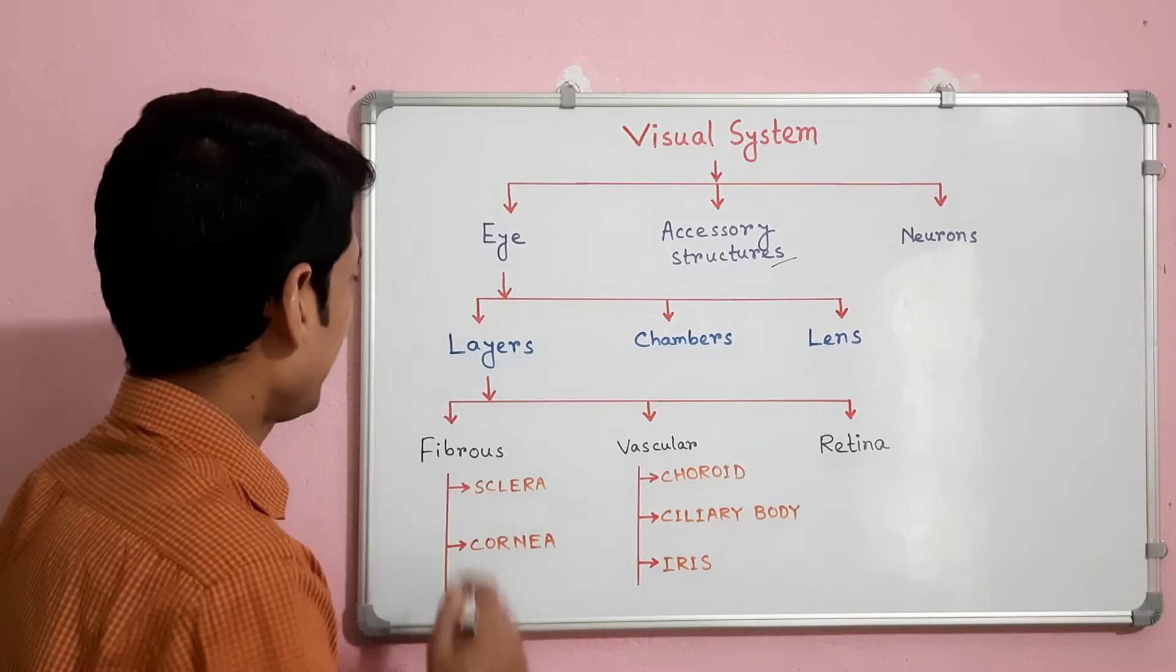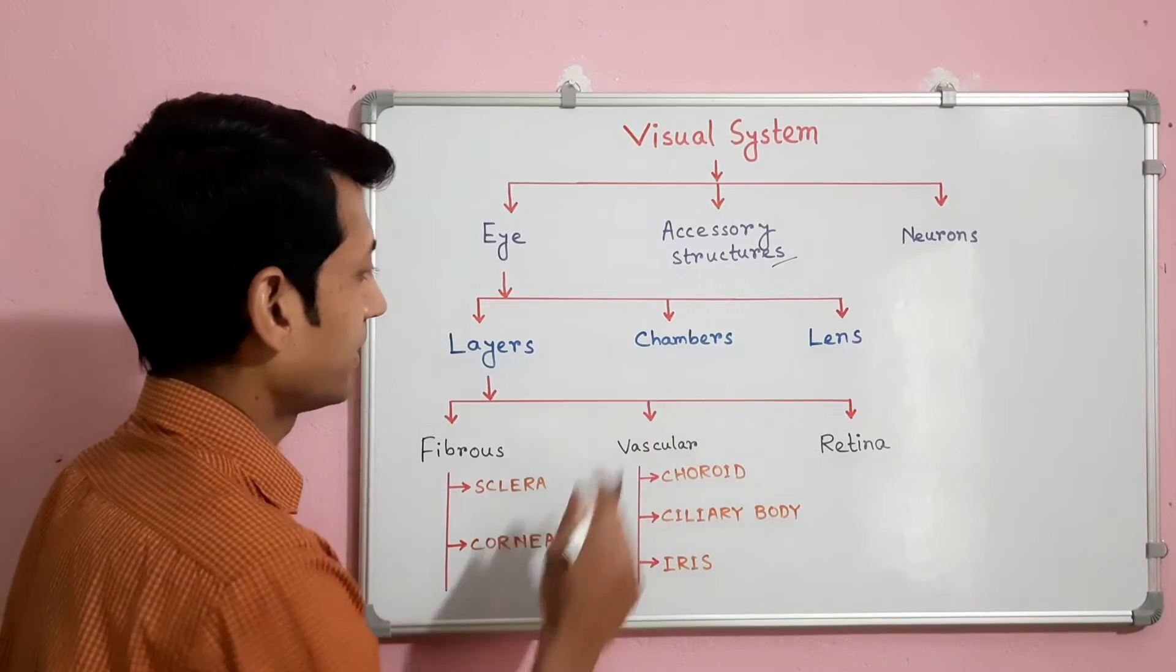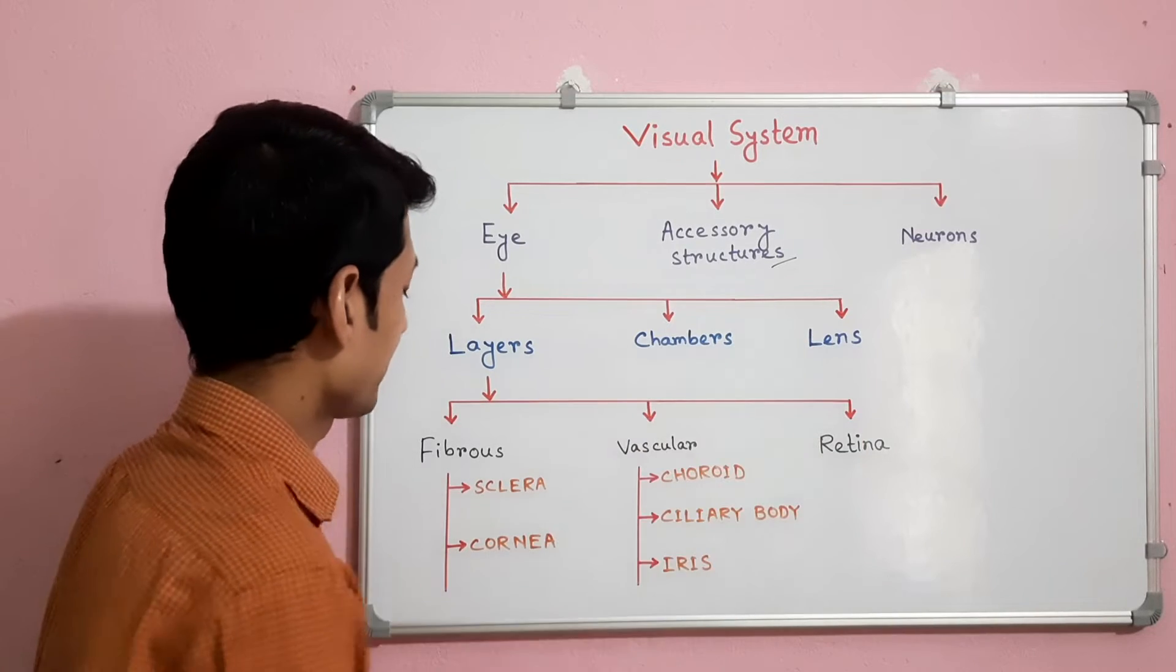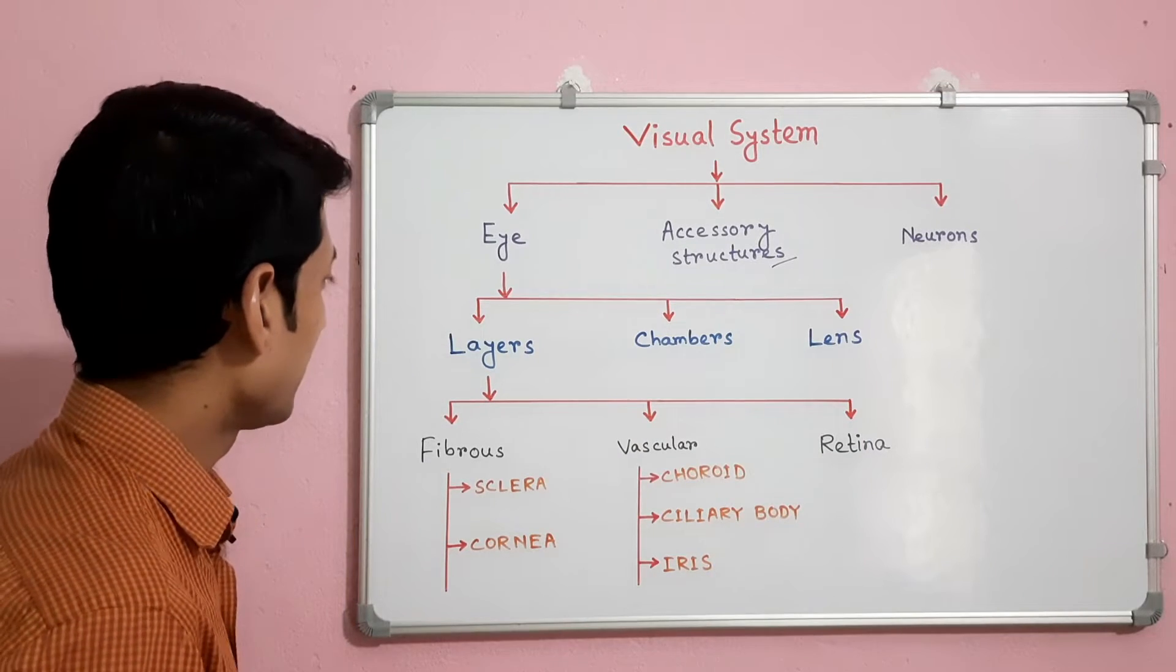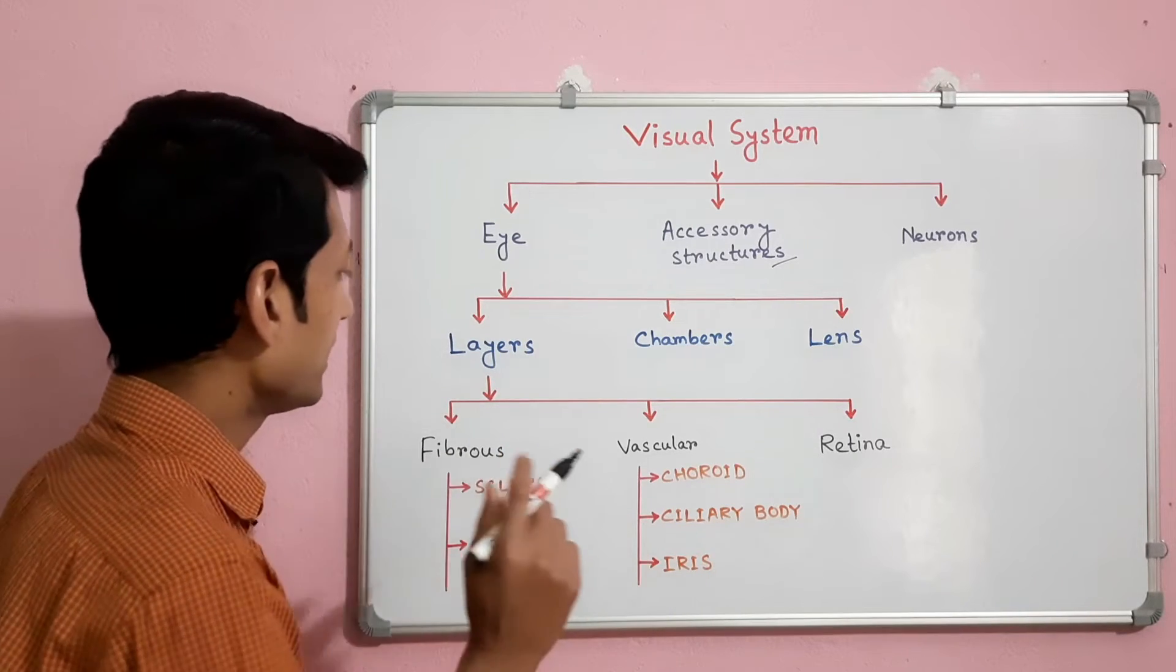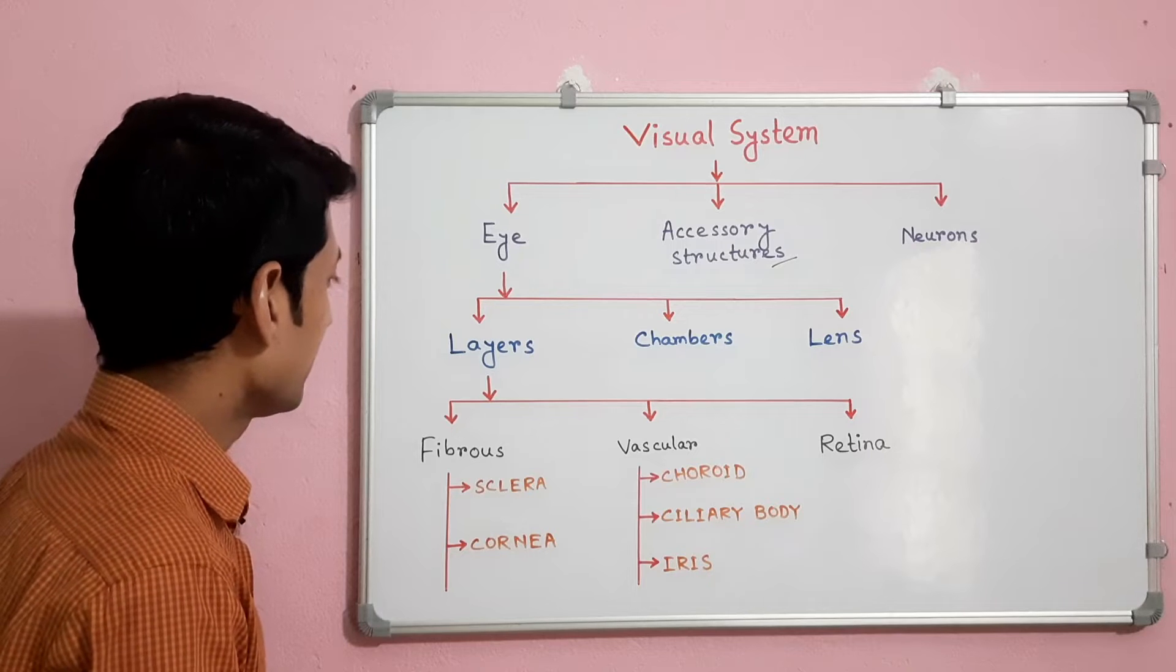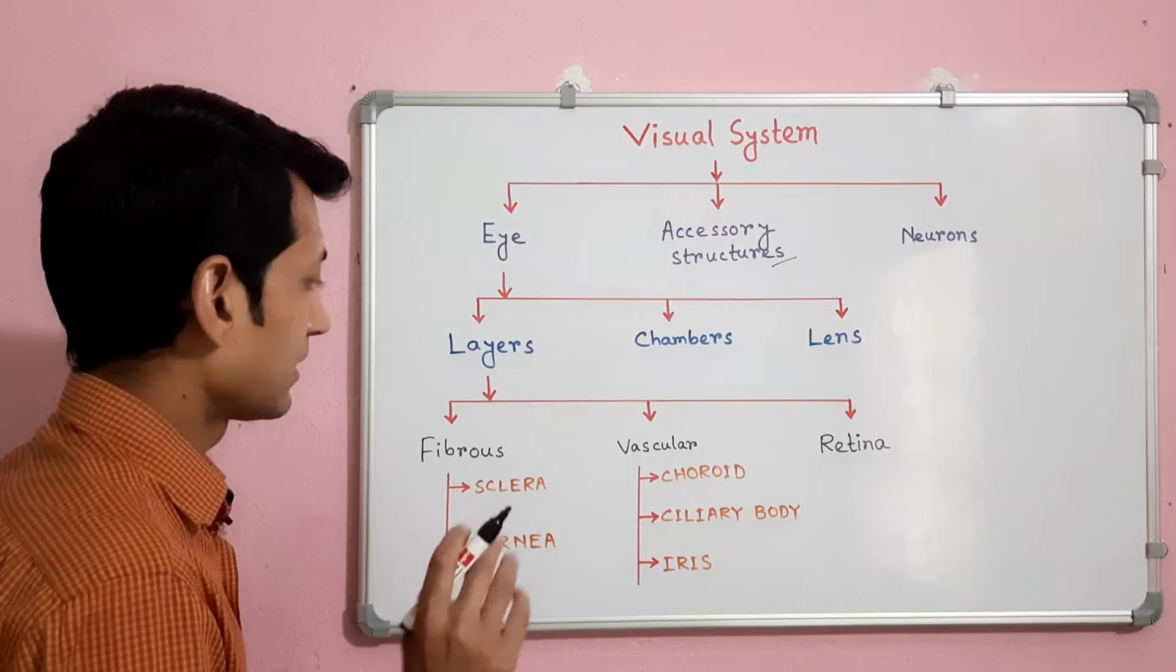The eye has different layers, different chambers and lenses. Today I will discuss only the different layers of the eye.